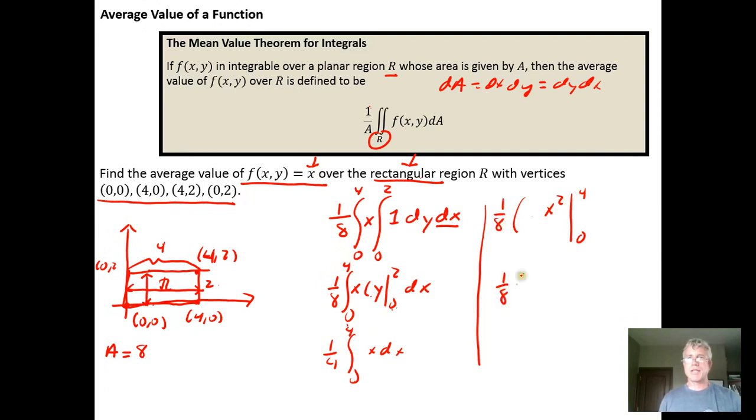So we get 1/8 times 4 squared is 16 minus 0 squared is 0, so that lower limit of integration again just zeroing out for us. So we get 16 divided by 8 is just 2 as our average value of the function over the region R.